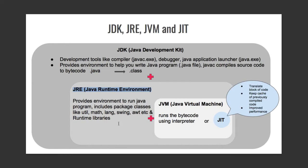JRE is an environment. It is JVM which actually executes your code and converts it into machine language or native language. This means your .class file is converted into machine language. So JVM is a subset of JRE, JRE is a subset of JDK, and JDK includes everything.